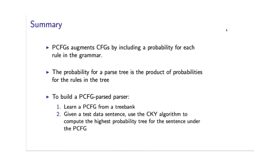So to summarize, what we've seen in this lecture of the course is that PCFGs augment CFGs by simply introducing a probability for each rule in the grammar. And they thereby assign a probability to every possible parse tree under the grammar, where the probability is just calculated as the product of probabilities for the rules in the tree.